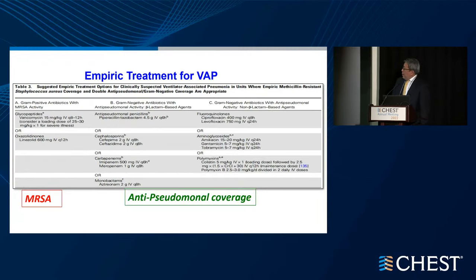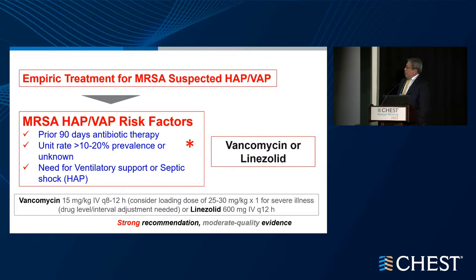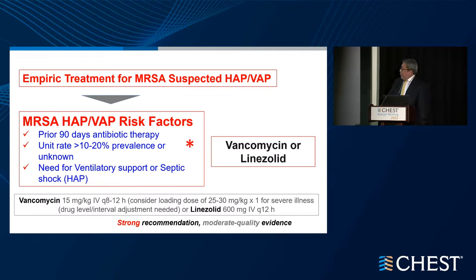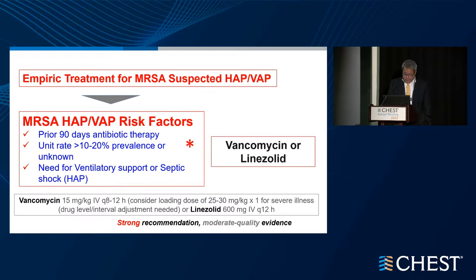Empiric treatment for VAP is also split between the suspicion for MRSA and anti-pseudomonal coverage. For suspected MRSA in the hospital, risk factors for HAP and VAP include 90 days of prior antibiotic therapy, the past 30 days, the unit rate being significantly high in prevalence, or not having this data, and the need for vasopressor support or a patient in shock. Coverage is typically vancomycin or linezolid, based on strong recommendations from the guideline.